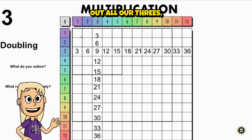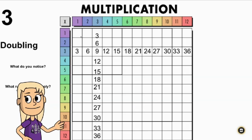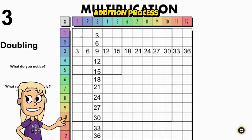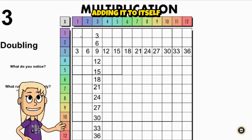Once we have figured out all our threes, let's look at the strategy of doubling. Doubling is an easy addition process, and doubling means taking a number and adding it to itself. For example,